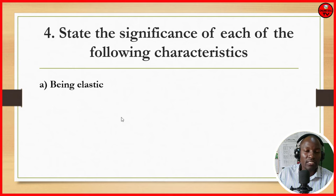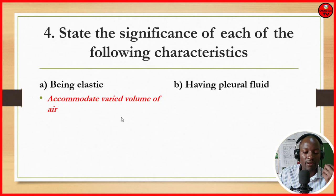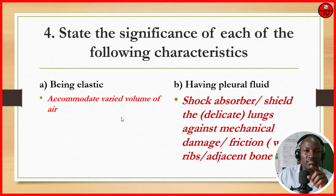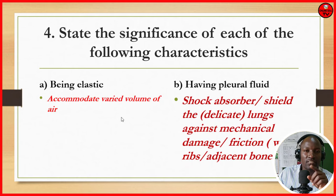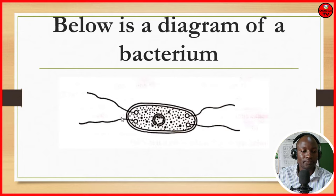State the significance of each of the following lung characteristics. Number 1, being elastic: this is for accommodation of varied volume of air. Number 2, having a pleural membrane: it acts as a shock absorber, shields the delicate lungs against mechanical damage, and reduces friction with the ribs and adjacent bones. That's why when you breathe you can't feel the lungs moving, because of the pleural fluid.